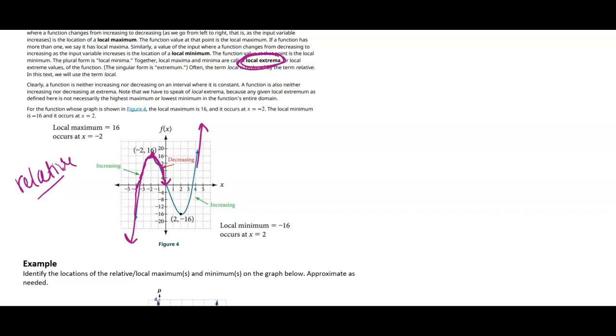Notice that we say that this has a local maximum of 16 and then where it occurs. So the local maximum value is the y value, and then you also want to include where that value occurs, so at x equals negative 2.